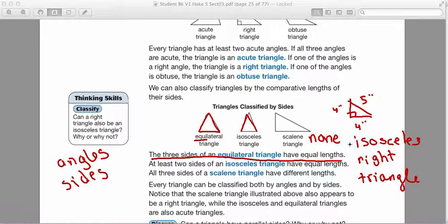You are always going to name the sides first before the angle. That's just how it's done. It's an isosceles right triangle. Let's go look at the examples.